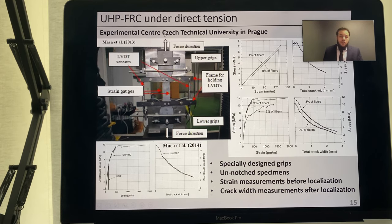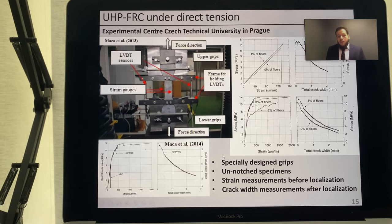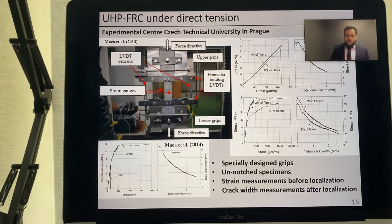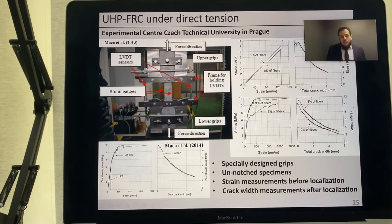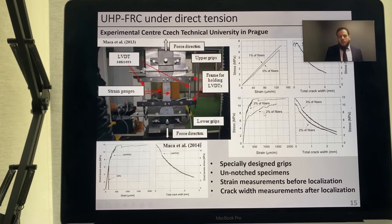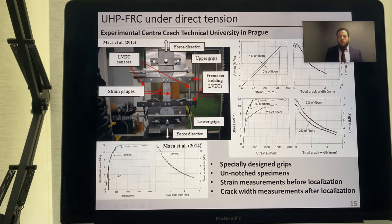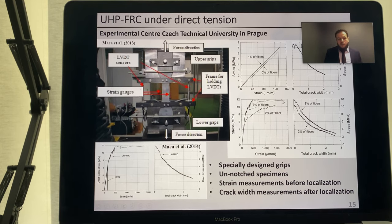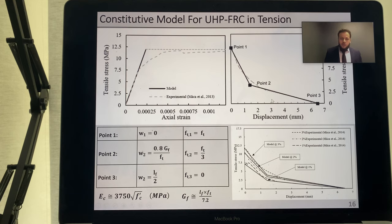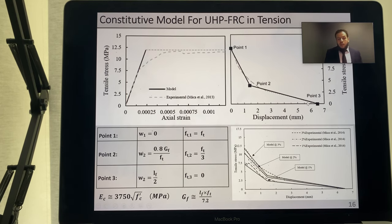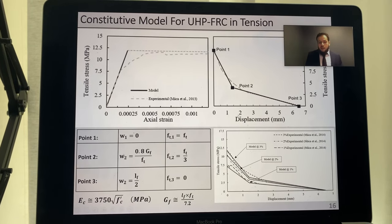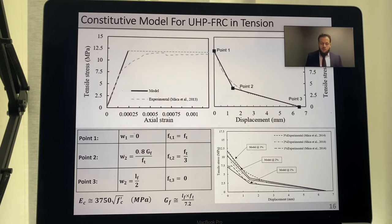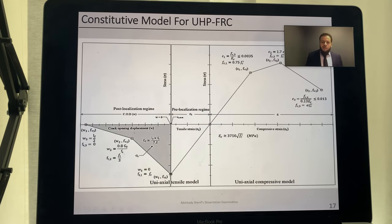Research conducted at the university in Prague used standard dog bone unnotched specimens in specially designed grips to avoid stress localization and grip problems in direct tension testing. They presented data in biphased form across four fiber contents: 0, 1, 2, and 3 percent fiber. I used the post-localization part to develop the strain-softening model for 2% fiber content, then applied it to 1% and 3% ratios with good results. The model accounts for fracture energy, characteristic length equivalent to fiber length, and tensile strength.